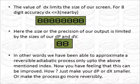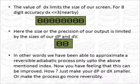So now, the value of dx limits the size of our screen. For 8-digit accuracy, as we calculated earlier, the dx should be less than or equal to 3. So here, the size of our dp and dv has limited the accuracy of our result. So in other words, we have been able to approximate a reversible adiabatic process only up to the above-mentioned index. Now you have a feeling that this can be improved. How? Just make your dp or dx smaller.